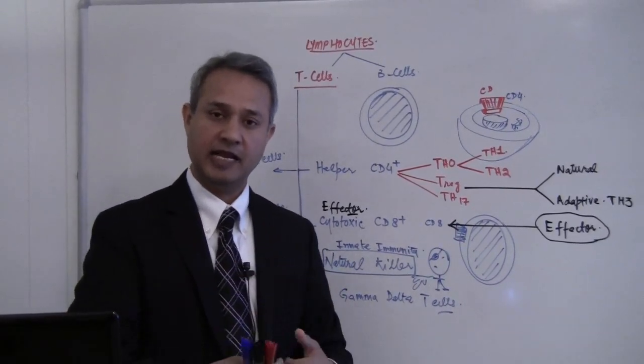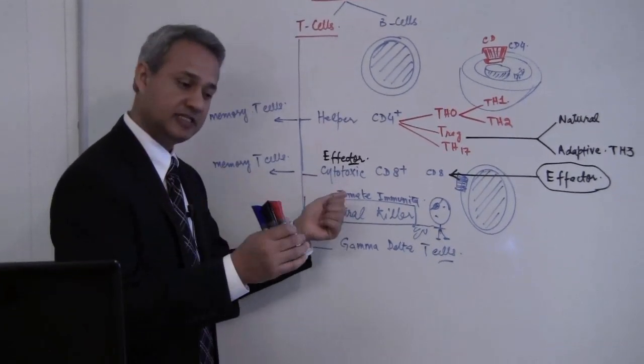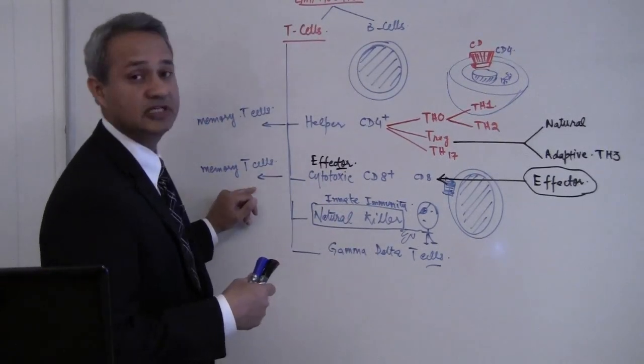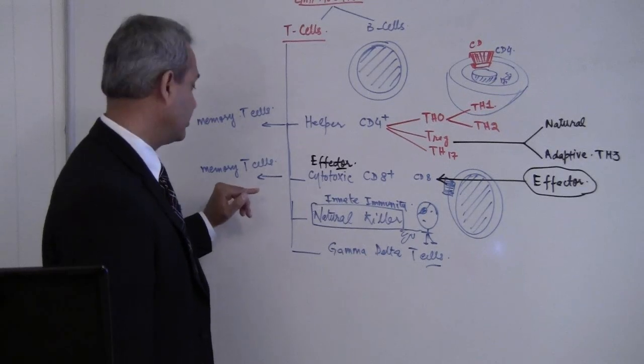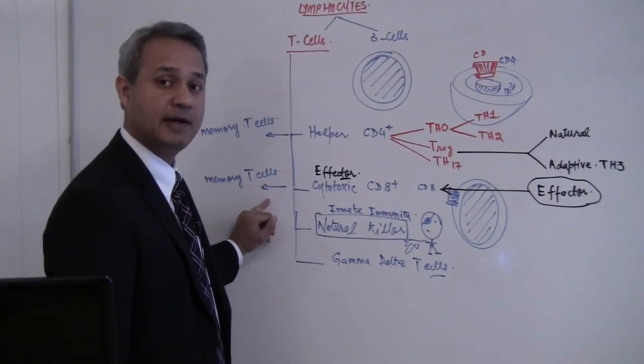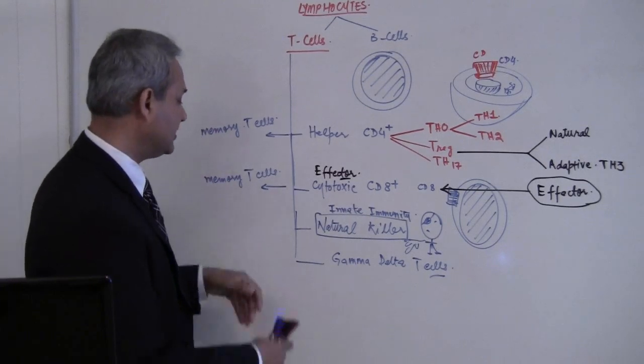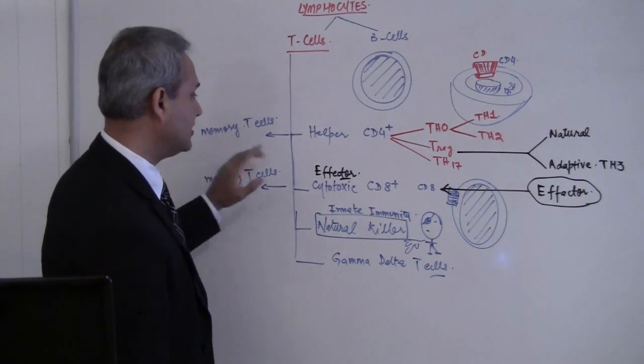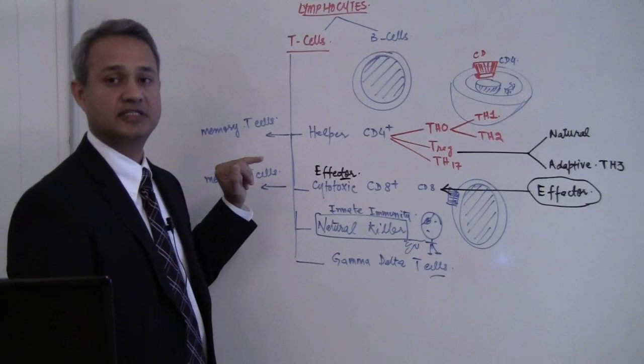Similarly, cytotoxic T cells, the effector T cells, the soldiers which are going to fight, can also become memory cells and wait for years for infection to re-occur. If that happens, they're going to become active and take care of it. Instead of writing another type, memory T cells are really a specialization of helper and cytotoxic T cells.